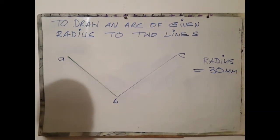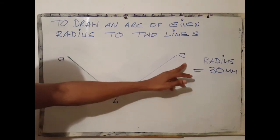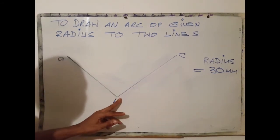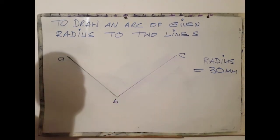Here we have an angle labeled A, B and C. At point B an arc of 30 mm is formed here.